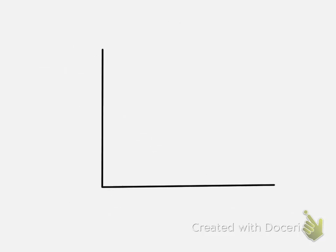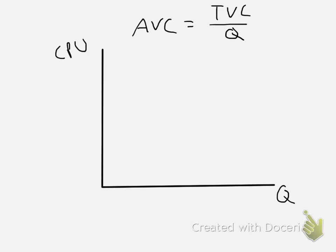Next up, we have average variable cost. With all these average-something costs, we just take the total something cost and divide it by our output. So in this case, average variable cost equals total variable cost divided by the quantity. I'm going to keep the same labels for my axes. Average variable cost just looks like a U — it goes down, and then it starts to come back up. I'm going to label this AVC.